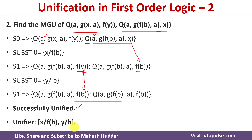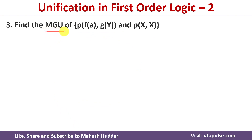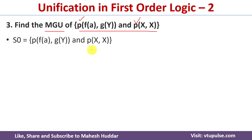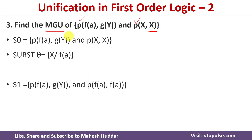Now I will take one more example. Again we need to find the most general unifier. The predicate symbol is p in both cases and there are two arguments: f(a), g(y) in the first expression and x, x in the second. We replace x by f(a). After this substitution, both occurrences of x become f(a), giving p(f(a), g(y)) and p(f(a), f(a)).